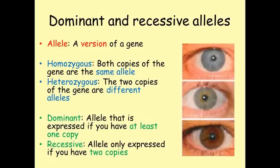Most often, the two versions we have for a gene are of the same allele. When this is the case, we say that someone is homozygous. Homozygous means that both copies of a gene are the same allele. If someone has different copies — for example, one version of a blue eye allele and another copy of a brown eye allele — we say that they are heterozygous. Heterozygous means that the copies of the gene are different alleles.